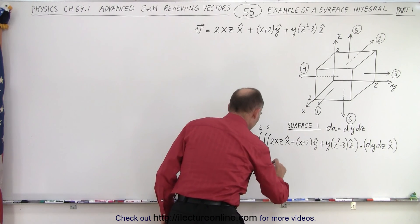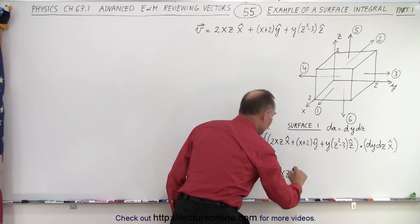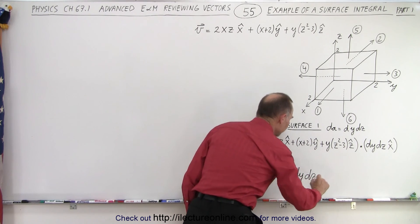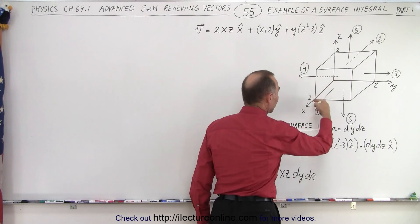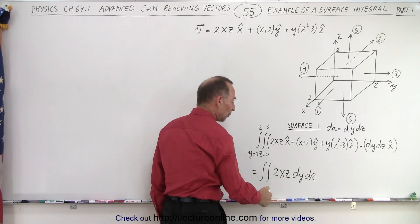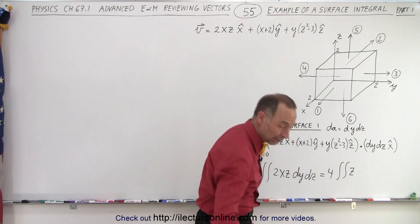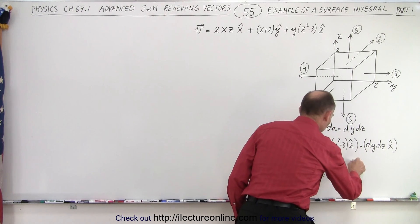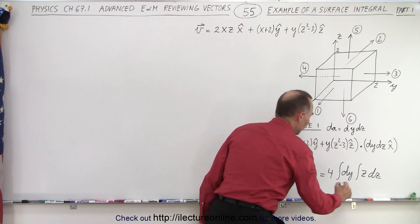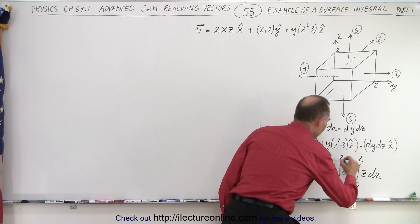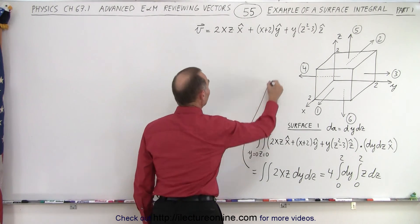So this becomes equal to the double integral. We're going to integrate over z and over y, and we end up with 2xz times dy dz. Now on the first surface, x will have a constant value equal to 2, so we can replace x by 2. We end up with 2 times 2, which is 4, times the double integral of z times dy dz. We can separate the variables — we put the dy integral here and the integral of z dz from 0 to 2 there, and from 0 to 2 for y as well.